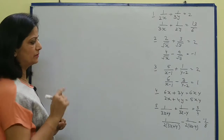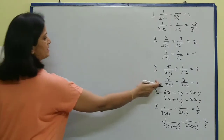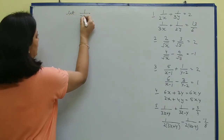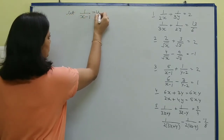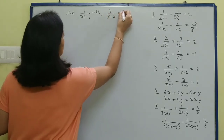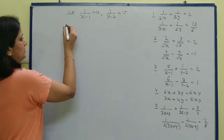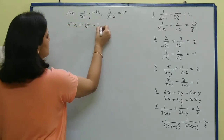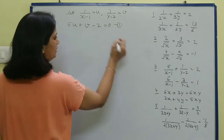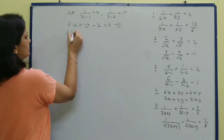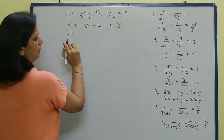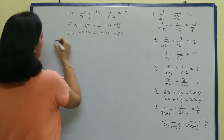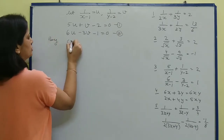Next question: 5 upon (x-1) + 1 upon (y-2) — the same term appears in both equations. So here we assume u = 1 upon (x-1) and v = 1 upon (y-2). The first equation becomes 5u + v - 2 = 0, and the second equation is 6u - 3v - 1 = 0.